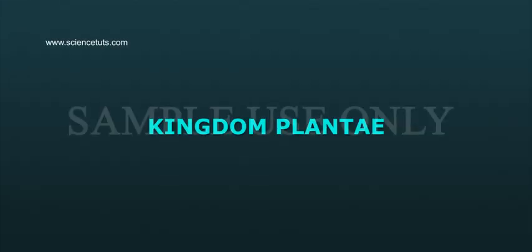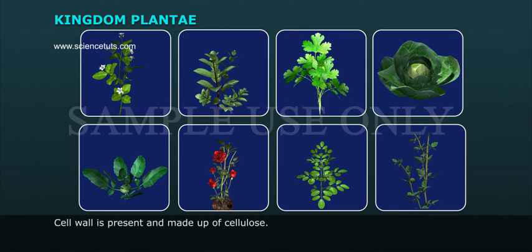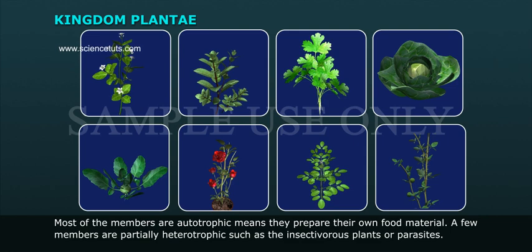Kingdom Plantae includes chlorophyll-containing multicellular eukaryotes called plants. Cell wall is present and made of cellulose. Most of the members are autotrophic, meaning they prepare their own food material. A few members are partially heterotrophic, such as insectivorous plants or parasites.